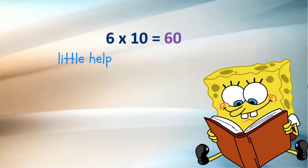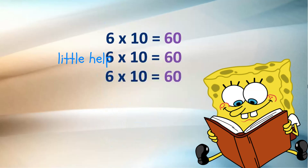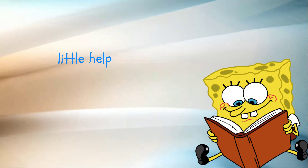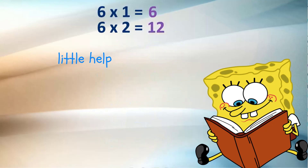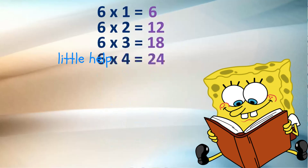6 tens are 60. 6 tens are 60. 6 tens are 60. 6 tens are 60. 6 ones are 6, 6 twos are 12, 6 threes are 18, 6 fours are 24.